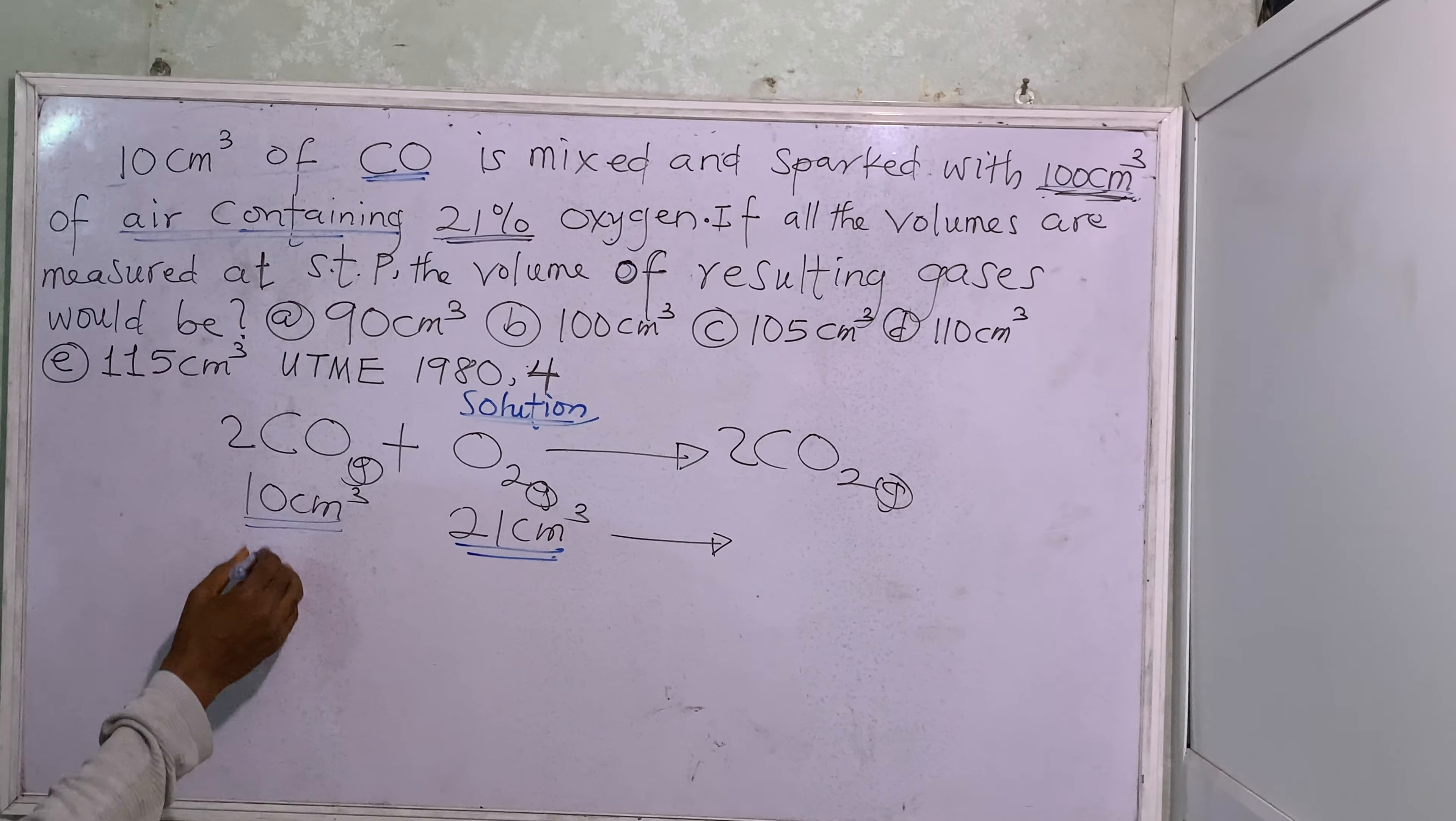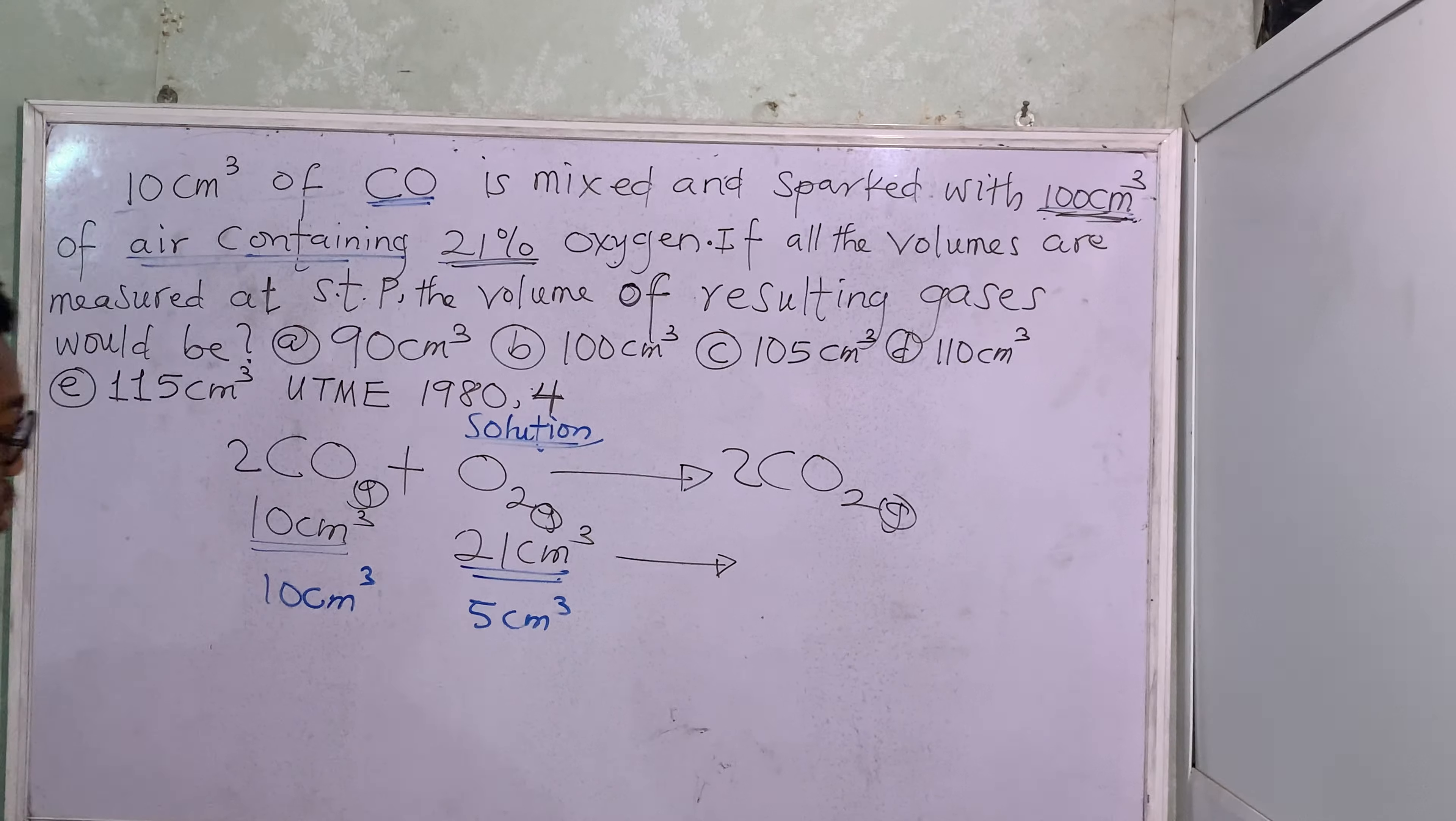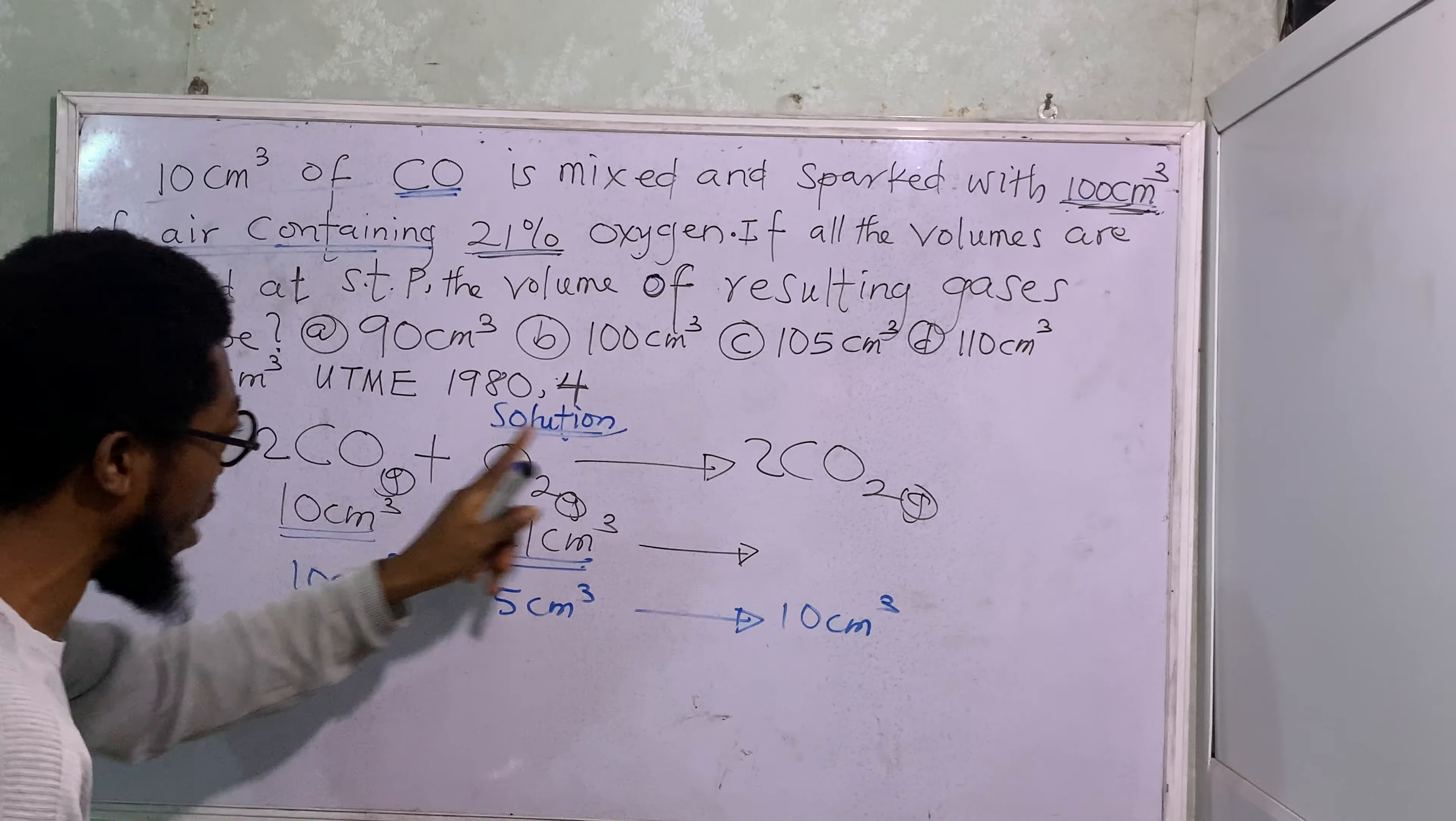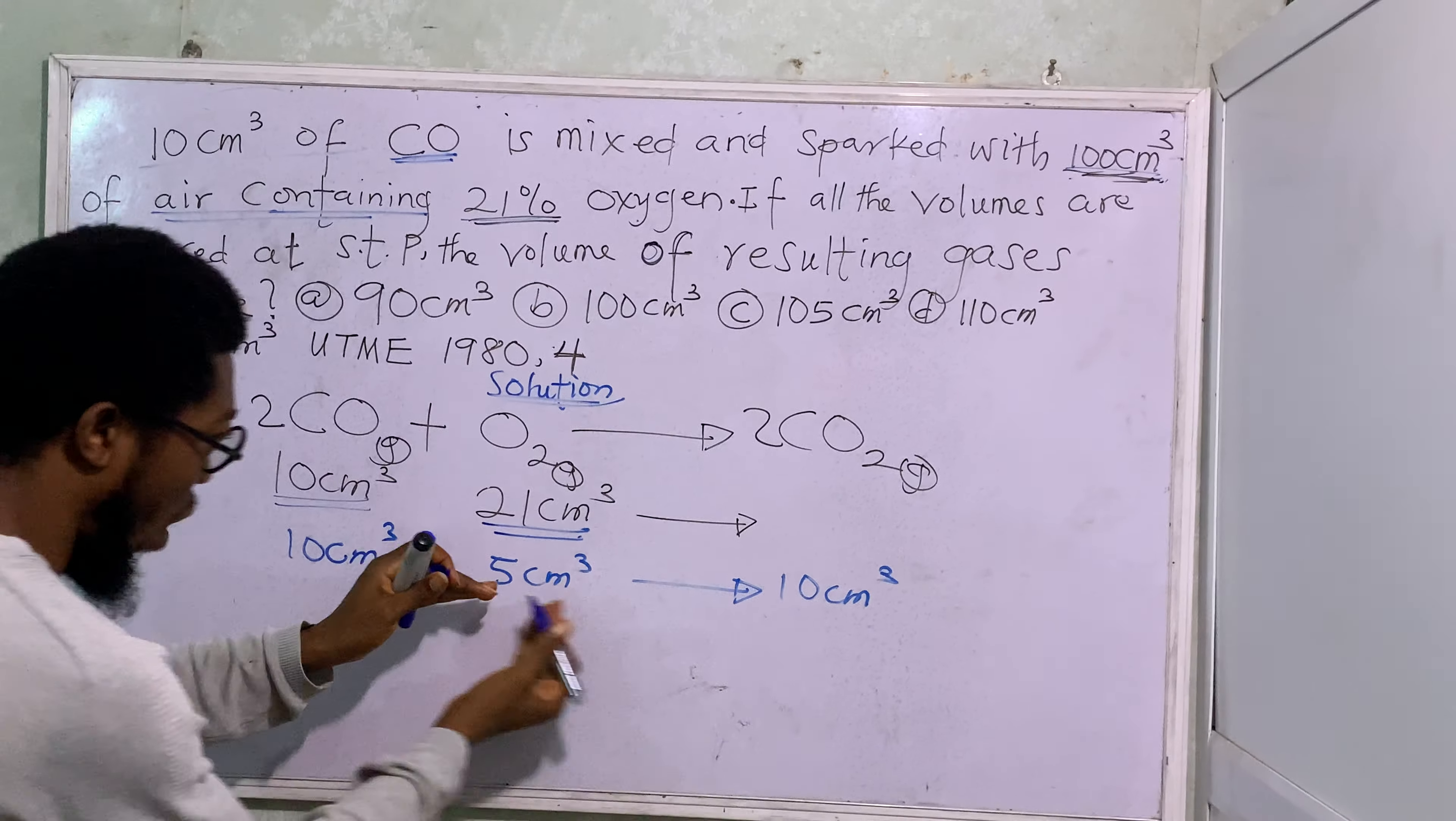So what is possible is to react all the 10 cm³ here with 5 cm³ out of the 21 cm³ that we have here. And it is going to give us the product of 10 cm³. If we are correct, we know: 2, 1, 2. 10, 5, 10. Because if you look for the ratio, it will give you 2, 1 and 2.